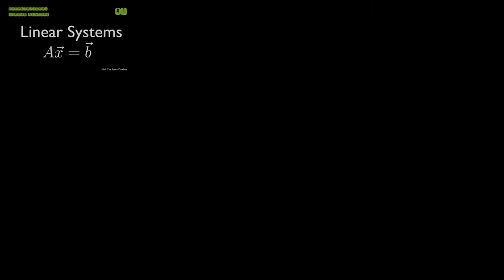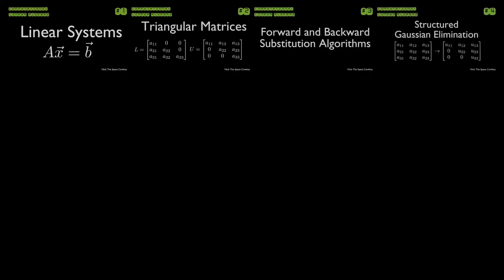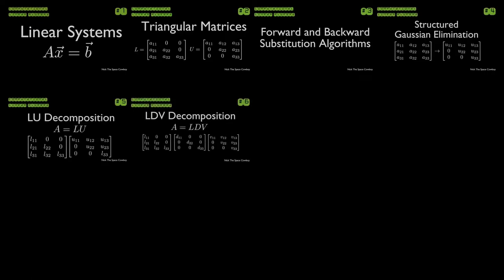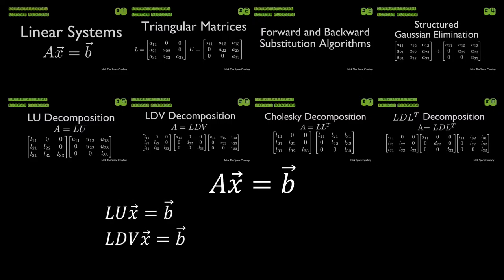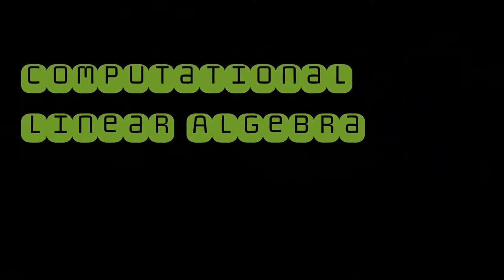Through the first eight episodes of this series, we've been discussing how we can solve a linear system computationally, and how we can gain further understanding of linear systems through the use of matrix decompositions. But we've only been considering square matrices, and in real-world applications of computational linear algebra, we're not always going to be able to work with square matrices. Welcome to the ninth episode in this computational linear algebra series, where we are going to discuss non-square linear systems.